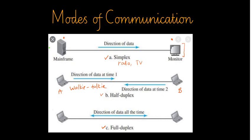The last mode is full-duplex. In full-duplex, data transmission can happen in any direction at all times. If we have two points A and B, both A and B can send and receive data at the same time without waiting for the other side to finish sending or receiving.